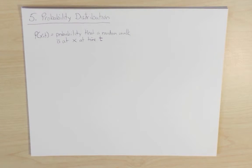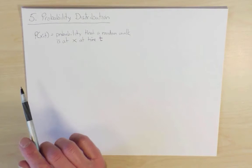A more fundamental way to characterize a random walk is by its probability distribution, namely the probability that a random walk is at position x at time t. We will call this fundamental probability distribution P(x,t).